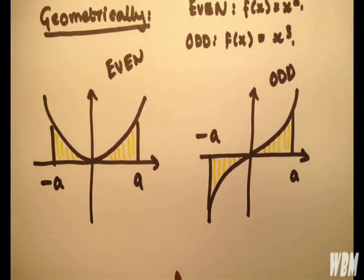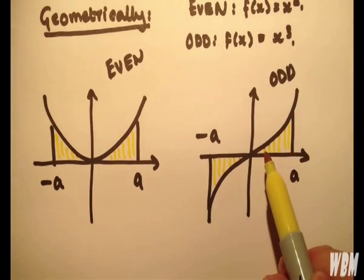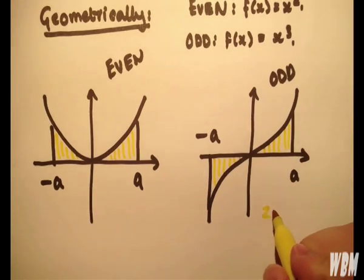Now what do you notice here? In the odd function we have negative of the same area up here. That's why they cancel out and equal zero.